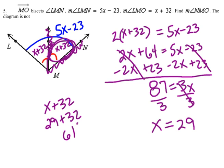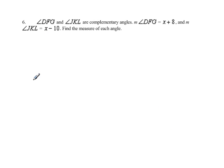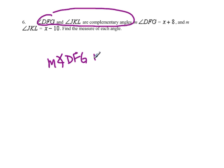Number six. It tells us that angle DFG and JKL are complementary. The measure of DFG equals x plus 8, and the measure of JKL equals x minus 10. Find the measure of each angle. Well, we are told that these two angles are complementary, so that means that if I add them together, the measures of the angles added together will equal 90 degrees. That's what complementary is.